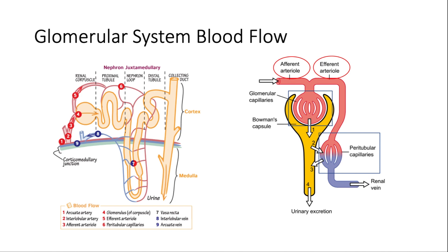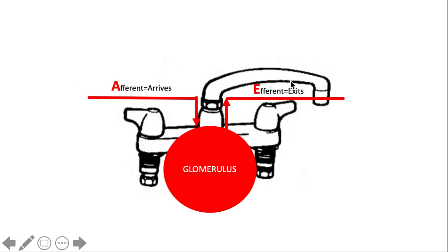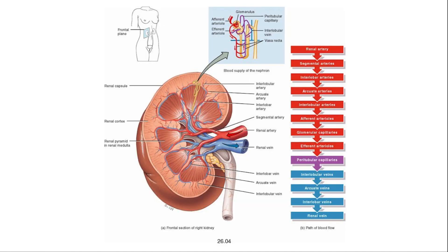This arrangement allows very tight control of how much fluid enters the glomerulus. If we dilate one side versus the other, we can control more or less flow. Think of it like a faucet — with both sides open, a lot of fluid flows into the sink, but turning one off reduces the flow significantly. Now here's the combined blood flow: starting from the renal artery all the way through the glomerular system and out through the veins.